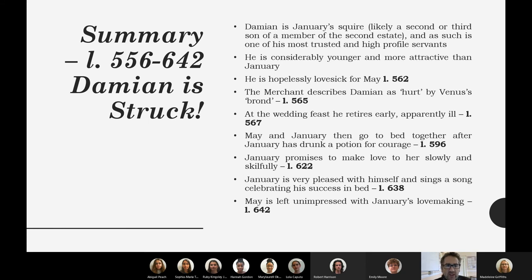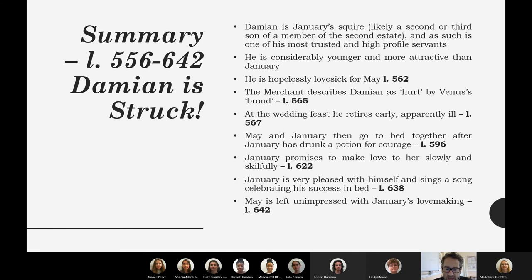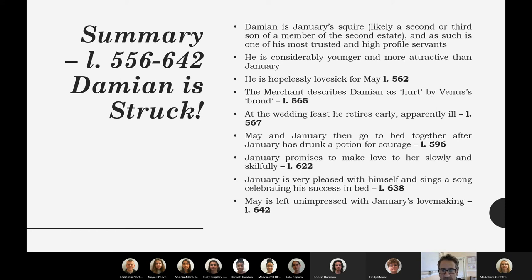January has sex with May. He's very pleased with himself. She thinks his performance is 'not worth a bean' — probably the most dismissive review of lovemaking in literature. January is very pleased with himself and his performance, so there's an irony of self: the gap between how the individual sees themselves and how the reader sees them. He sits up singing, almost cultish — the lovemaking makes him feel young again. He chatters away like a magpie. May is left unimpressed.